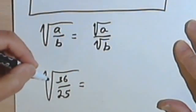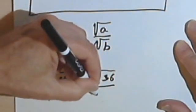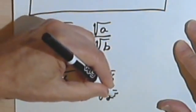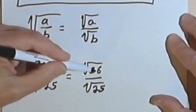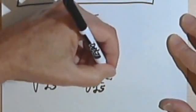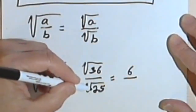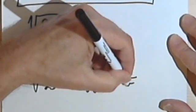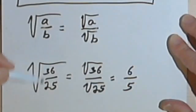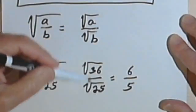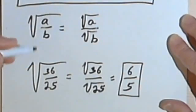However, if we break this down into the square root of 36 over the square root of 25, it becomes a whole lot easier. So 36 is a perfect square, the square root of 36 is 6, 25 is a perfect square, the square root of 25 is 5. So we started out with this big fraction, broke it down into two radicals, and we end up with a simple fraction.